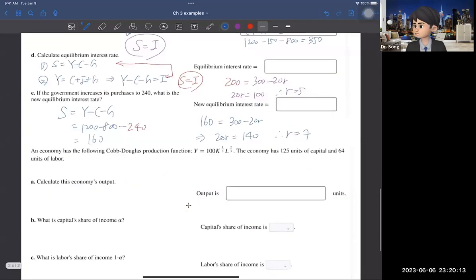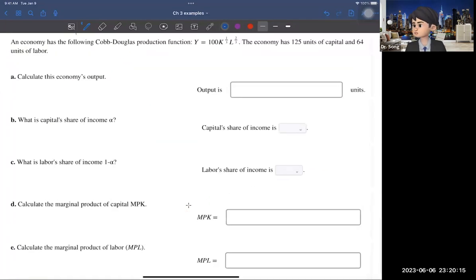Now, here, we have one last question. We have a Cobb-Douglas production function, Y equals 100 times K to the power of one-third, times L to the power of two-thirds.